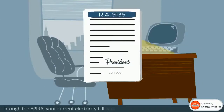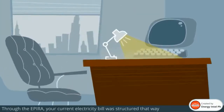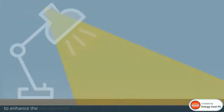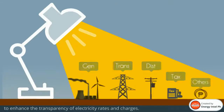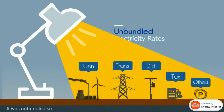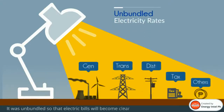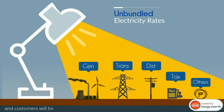Through the APERA, your current electricity bill was structured to enhance the transparency of electricity rates and charges. It was unbundled so that electric bills will become clear and informative, and customers will be able to see the rates of each service they are paying.